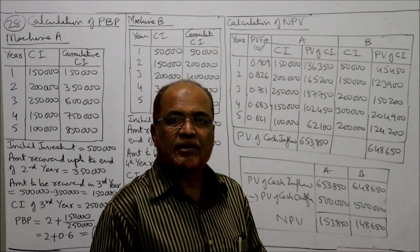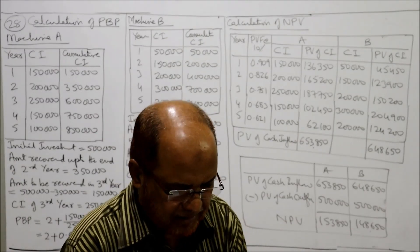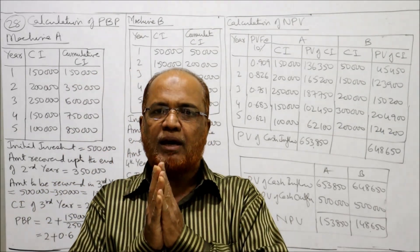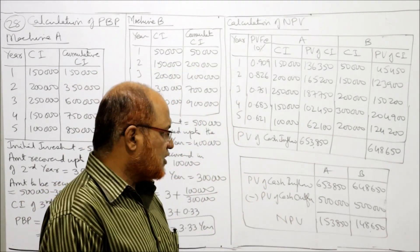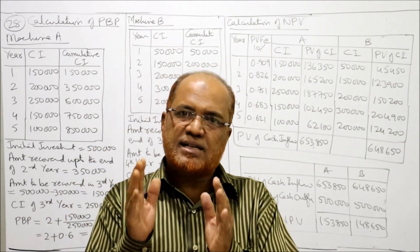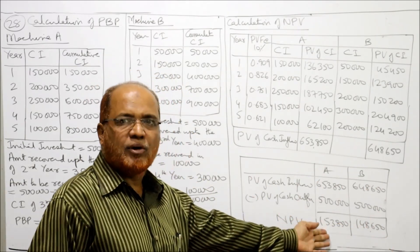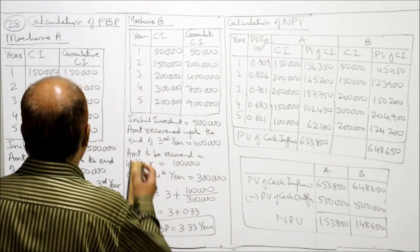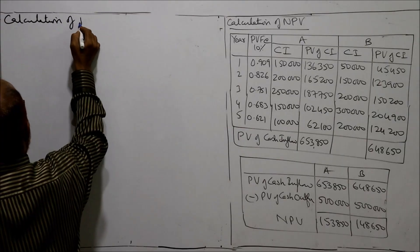NPV for machine A equals PV of cash inflow minus PV of cash outflow: six lakh fifty-three thousand eight hundred fifty minus five lakh equals one lakh fifty-three thousand eight hundred fifty. NPV for machine B equals six lakh forty-eight thousand six hundred fifty minus five lakh, which equals one lakh forty-eight thousand six hundred fifty. NPV says machine A is better because its NPV is more.